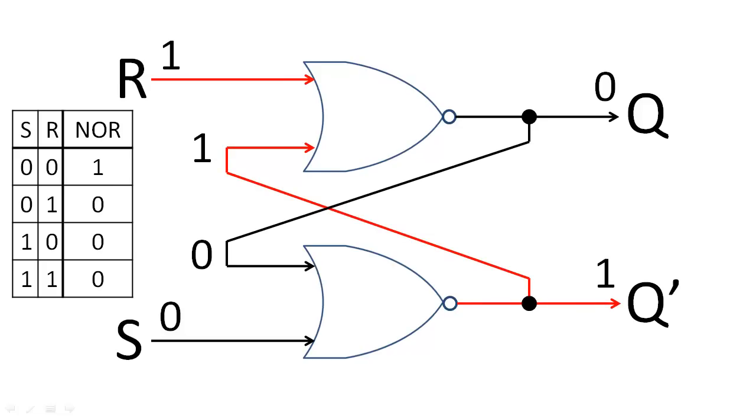Finally, let's change S back to 1. Because both R and S are 1, the state and its complement are now both 0. Since we do not want the state and its complement to be equivalent, we say that this input combination is forbidden.